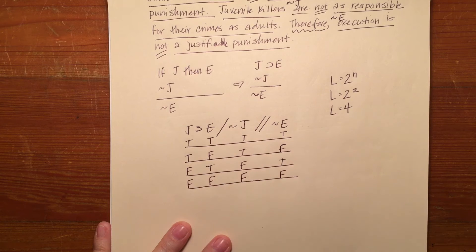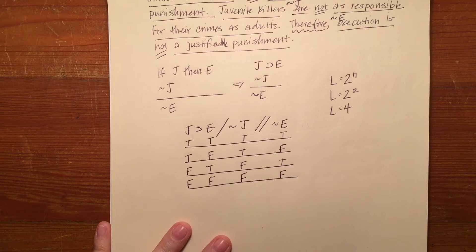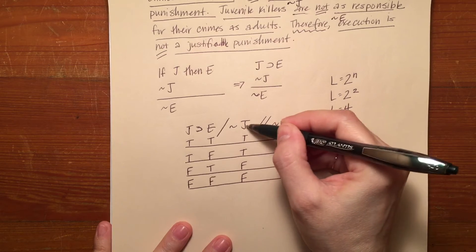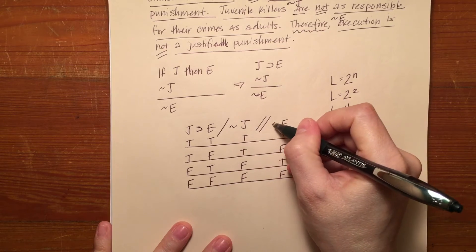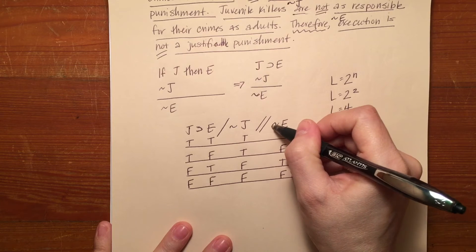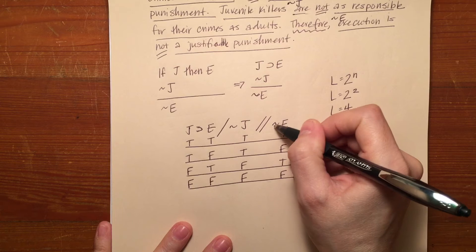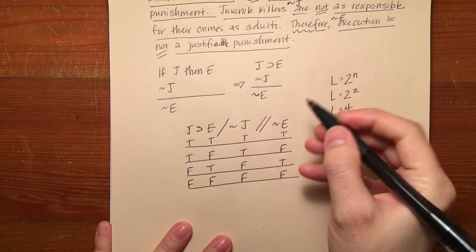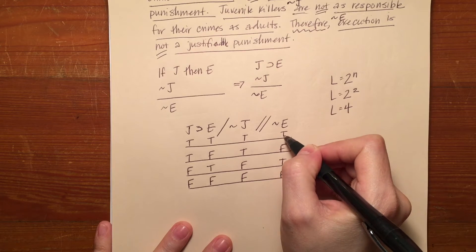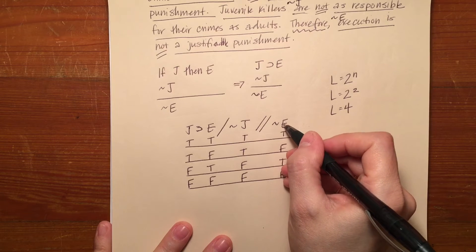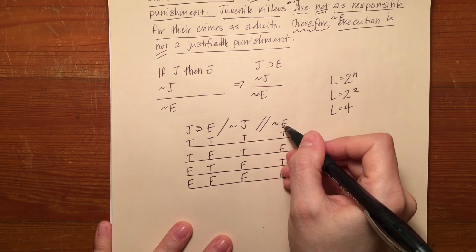I'm going to work the tildes first because it seems to make the most sense because they modify only what is exactly after them or they affect what's directly after them only. So if something is true it's going to make it false. If something is false it's going to make it true.